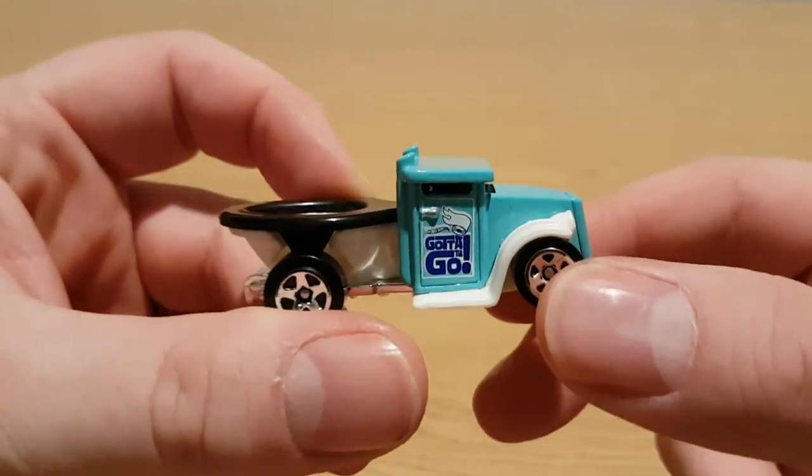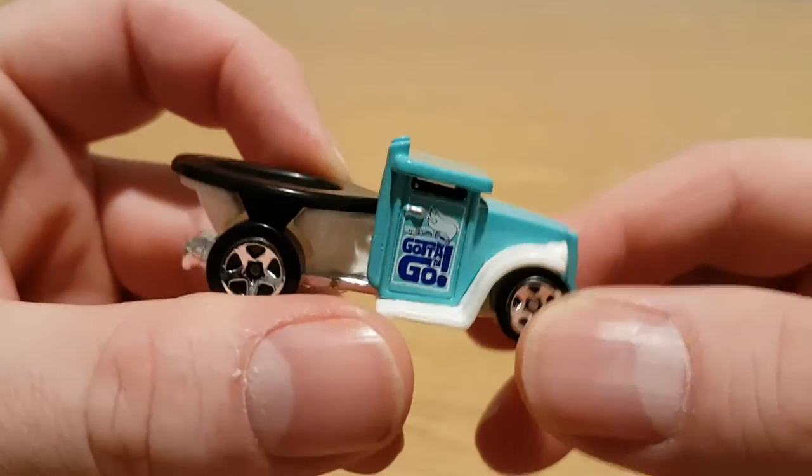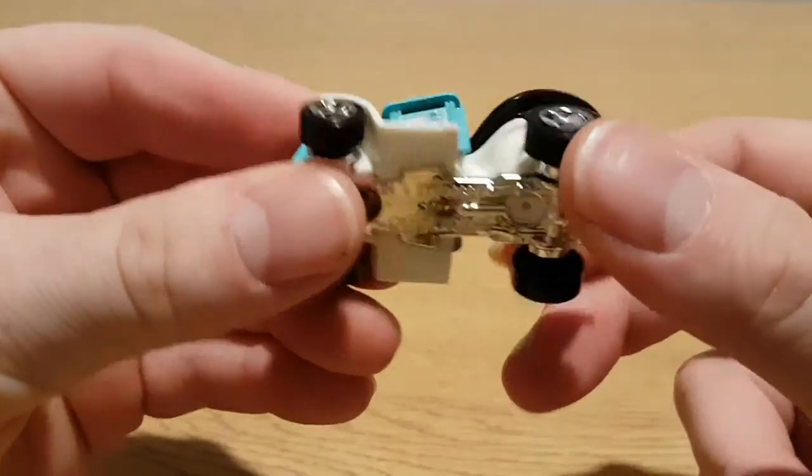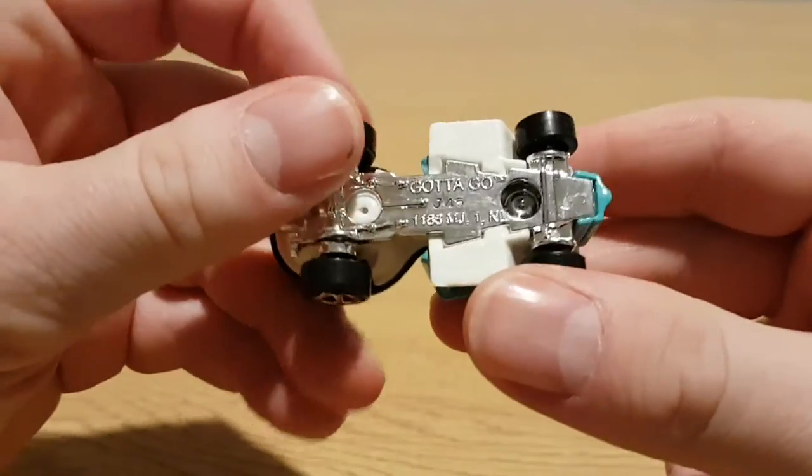So at the side here you can see the model name again, the Gotta Go. And again on the other door. And there underneath as well, the Gotta Go.